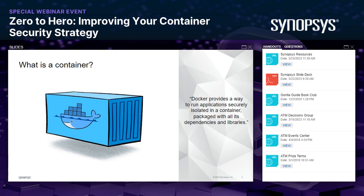A few years back, a bunch of smart engineers wondered why it was easier to ship coffee from one side of the world to the other than to ship software from a developer's laptop into a production environment. Anyone who's worked in development knows that was a massive problem. Since the intermodal container spurred global trade, Docker engineers likely had similarly hefty goals — essentially changing how organizations deploy and maintain software by packing things into a standardized container solution.